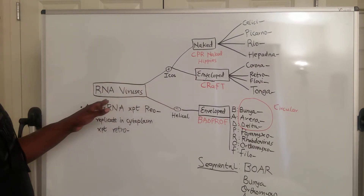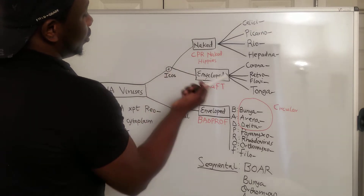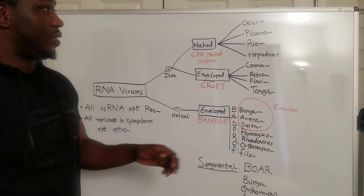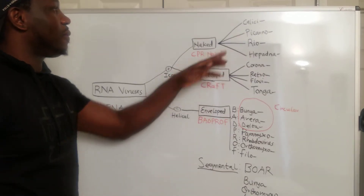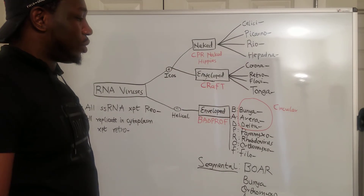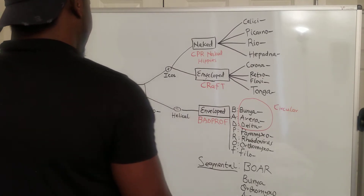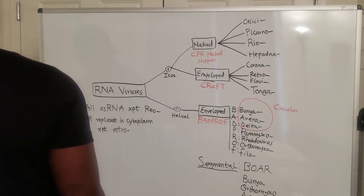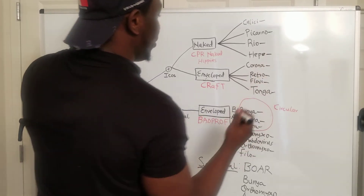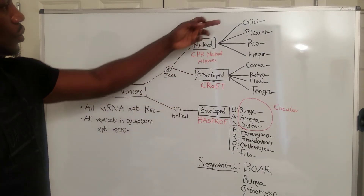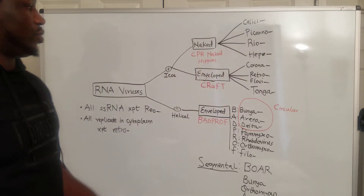For the positive icosahedral RNA viruses, we classify them into naked or enveloped. For the naked ones, remember the mnemonic 'CPR naked hippies.' C is calicivirus, P is picornavirus, R is reovirus, and the hippies — H — is hepatitis A virus. Those are the naked positive RNA viruses.